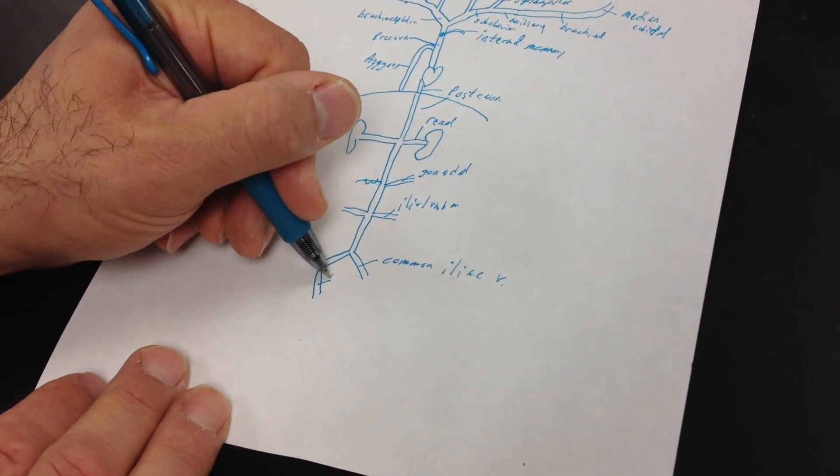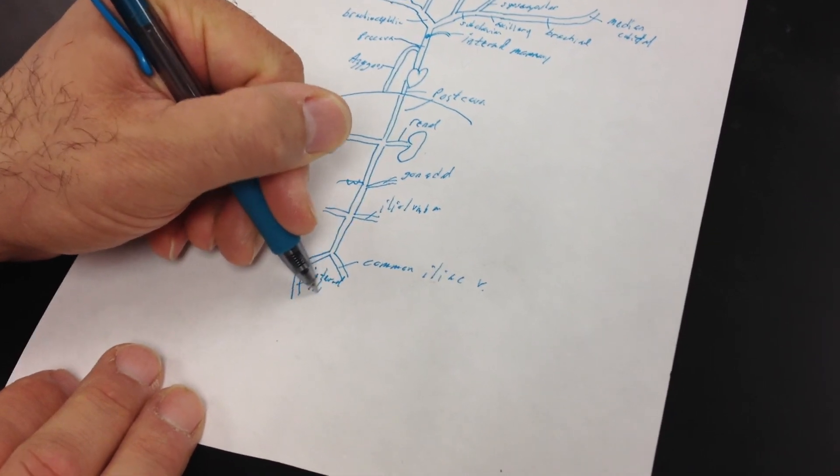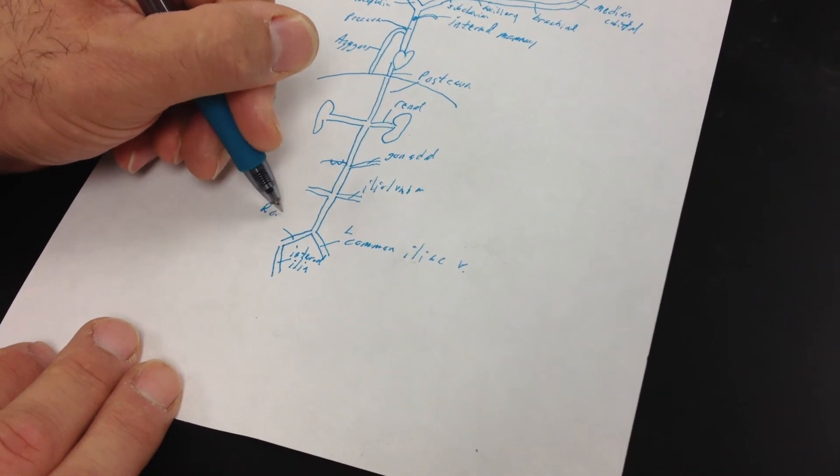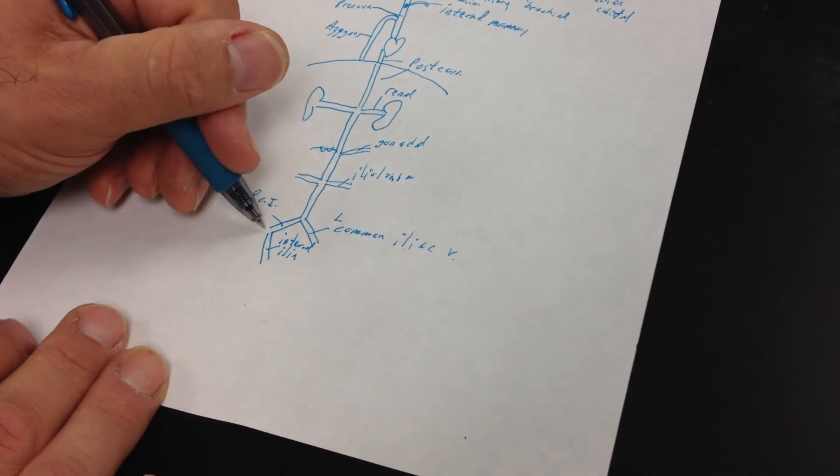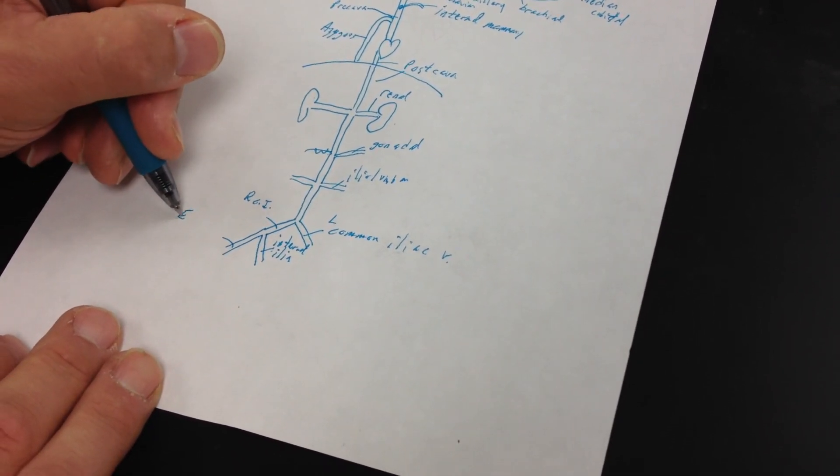And this is the internal iliac. So there's a common iliac left and right? Yep, left and right. So that would be our left, that would be our right common iliac. Okay, so the internal is going to branch off of there. Then we have our external iliac.